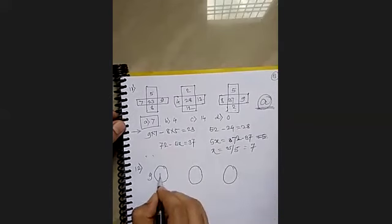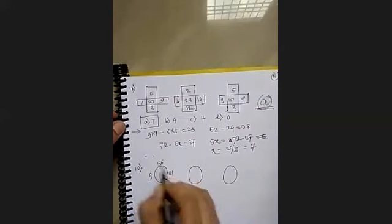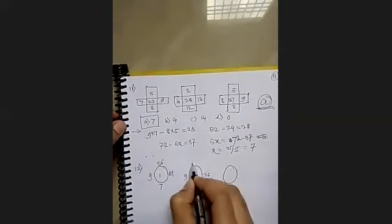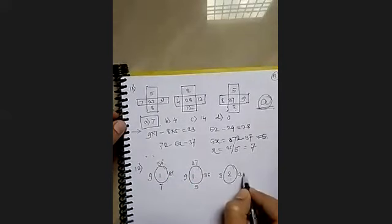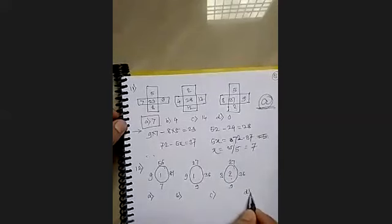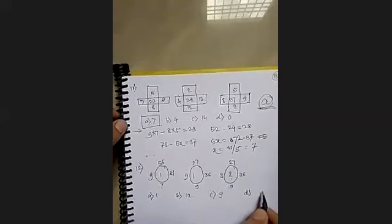So 9, 1, 81, 7, 56, 9, 1, 36, 9, 27, 3, question mark, 36, 27, 9. So options are 1, 12, 9, 3. Don't write anything irrelevant.